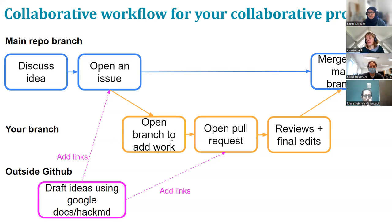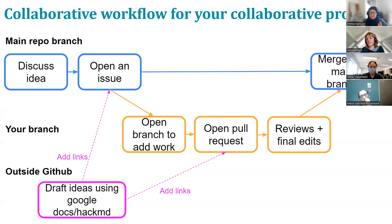You would open your branch very early and make sure you link in the people you want to work with via the pull request. Start a branch, do a little bit of work, and start the pull request before you've finished. In the pull request, you can assign people to it, and whenever you update the pull request those assigned people get an email about the updates. That's really useful if you're working very actively with a group of people — but it can also be annoying. If you're not actively working with others, it's better to just have yourself in the pull request until you're ready.